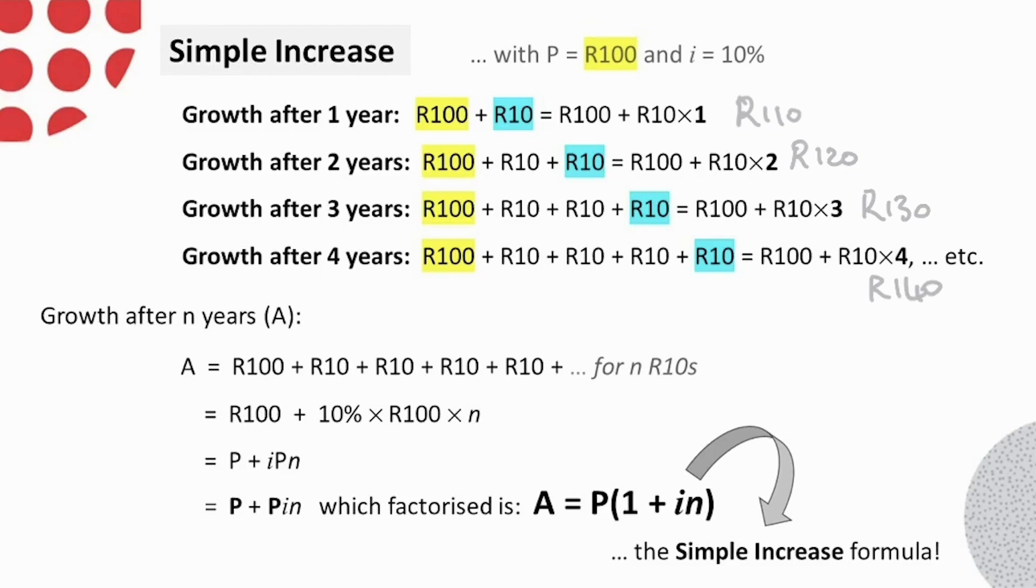If we expand the scenario for N time periods, we see that we must add this 10 rand N times. In other words, to our original value, we must add the rate of growth times the original value, times the number of time periods. Bringing in our unknowns, P, I, and N, the equation looks like this. Then rearranged and factorized gives us our simple increase formula.